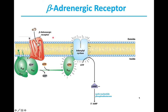The beta-adrenergic receptor is a G-protein-coupled receptor. Like all G-protein-coupled receptors, the beta-adrenergic receptor is an integral protein with 7 hydrophobic helical regions that span the plasma membrane 7 times. Thus, G-protein-coupled receptors are also called heptahelical receptors.